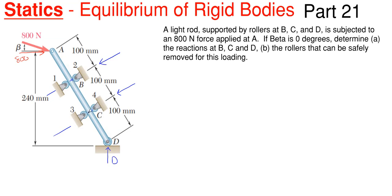These rollers cannot grab onto and pull the rod back — they can only push. So by determining the arrow direction for each roller, I can determine which rollers are actually supporting something and which are not. For instance, if the reaction shows the rod pushing on a roller, that roller does not have the ability to grab and pull it back. I'm going to assume my reactions in a chosen direction. I'll call this reaction B, this reaction C, and this reaction D down here. So we have three unknowns to determine and only one applied force.